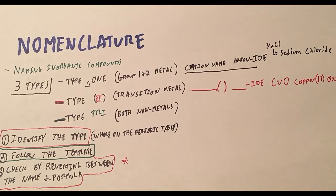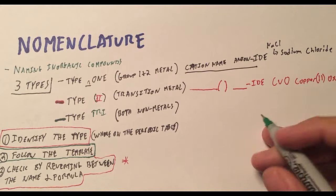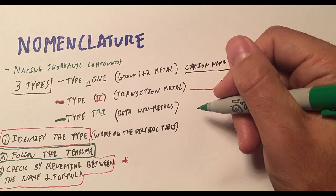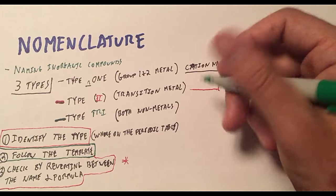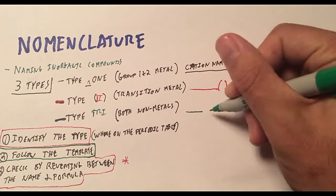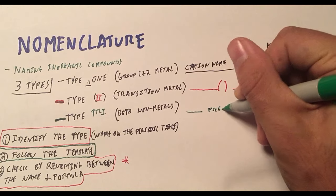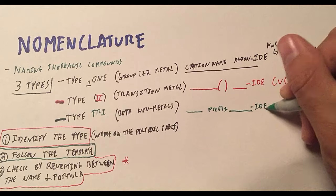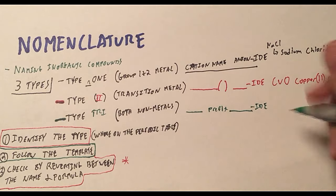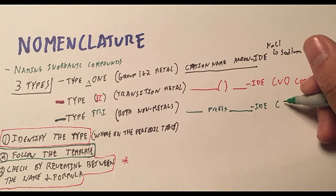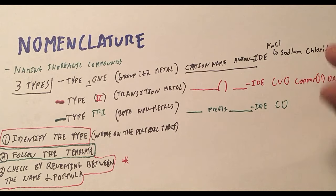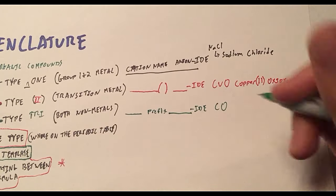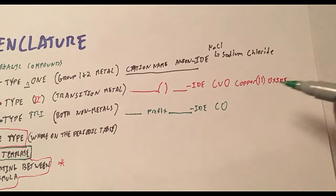Let's go ahead and move on to Type 3. Type Tri would be something like carbon dioxide. And this is where you're going to have name, and then prefix, and then name with i-d-e as the ending. So let's go ahead and just do CO, right? And you guys have all heard of this. I have copper, that's my first name.